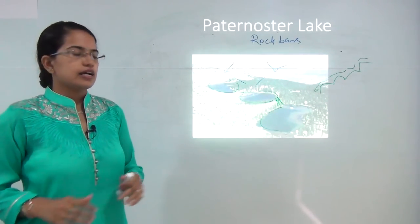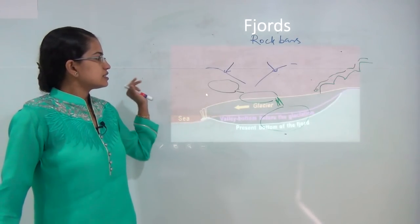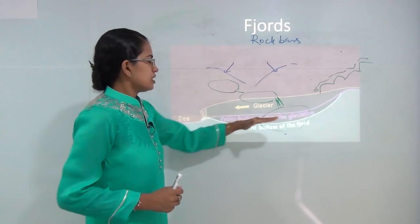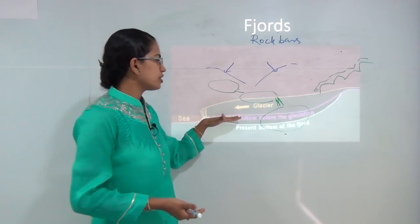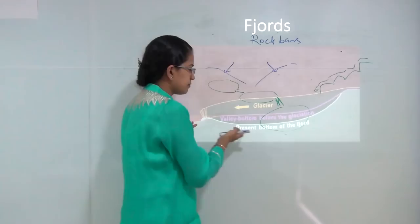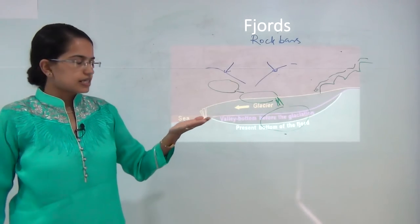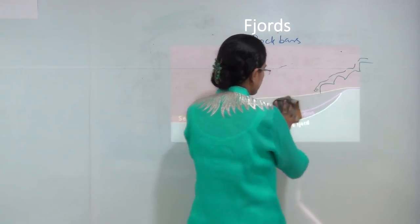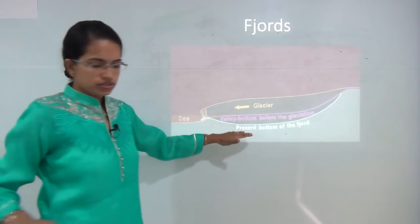Fjords are formed when the glacier is moving along the surface. The pink line indicates the base of the glacier basin before the movement of the glacier, but after the movement there is erosional activity, creating a new bottom line for the fjord. It is basically the opening of the glacial trough — as the glacier moves away from this region, a glacial trough is formed in this region, and this is known as a fjord.